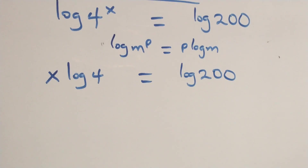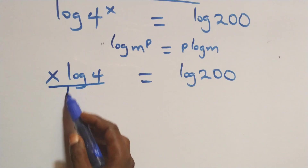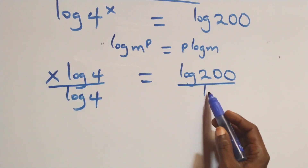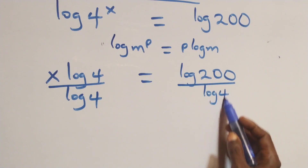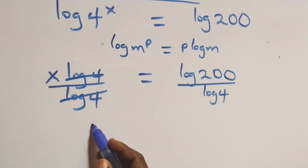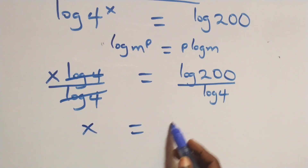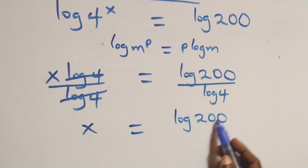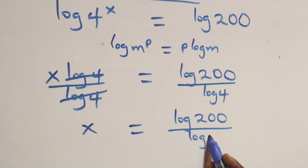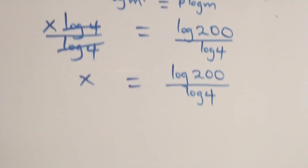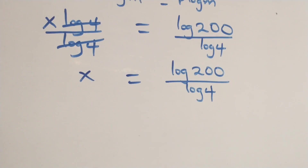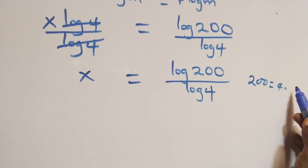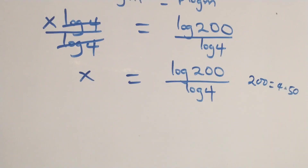At this point we divide both sides by log 4. Dividing both sides by log 4 means the log 4 terms cancel each other, and we have x equals log 200 over log 4.